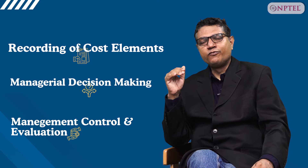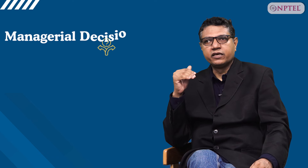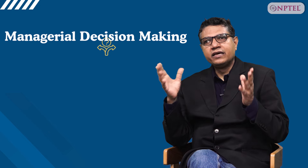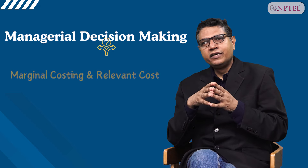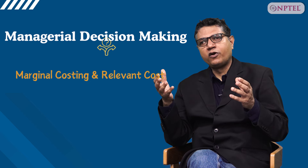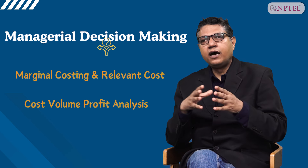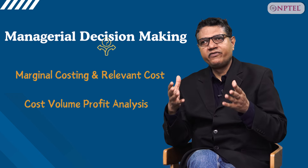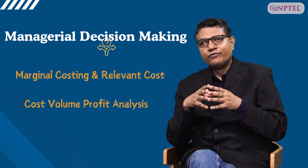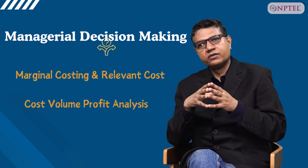In the second part, once the cost records have been maintained, the next part comes in the decision making — how the managers take decisions on the basis of their cost records. Here we will learn how marginal costing tools and cost volume profit analysis helps the managers in taking the right decisions, how the relevant cost is identified, and we see different cases where cost accounting records can be helpful for the managers for decision making.